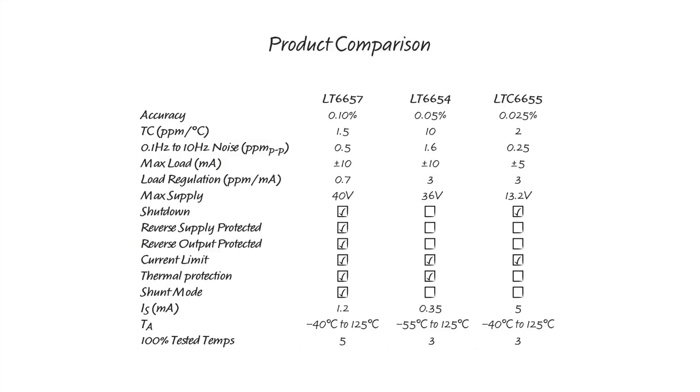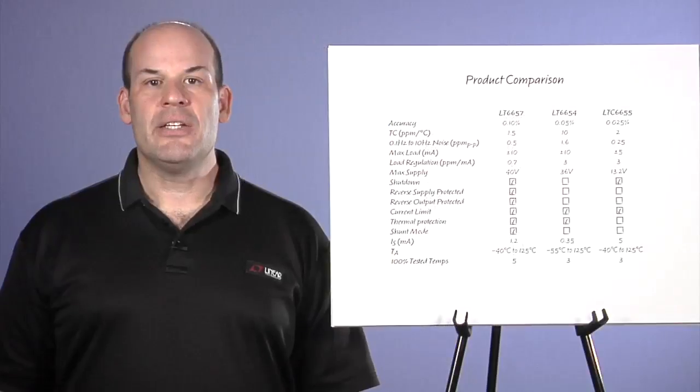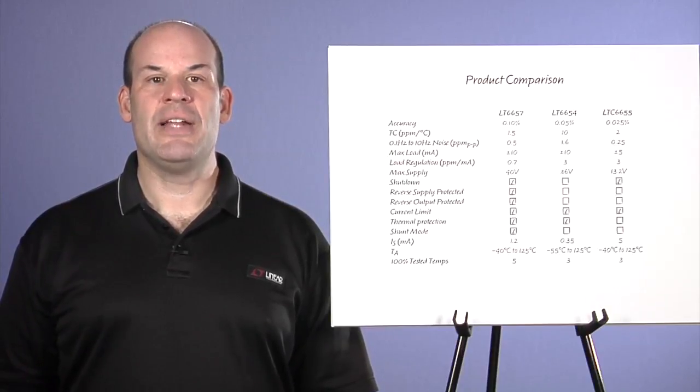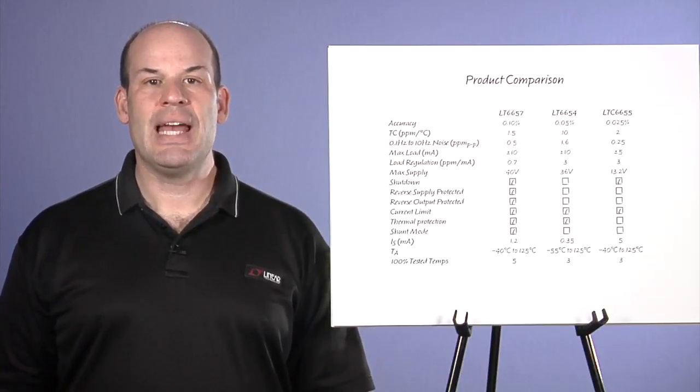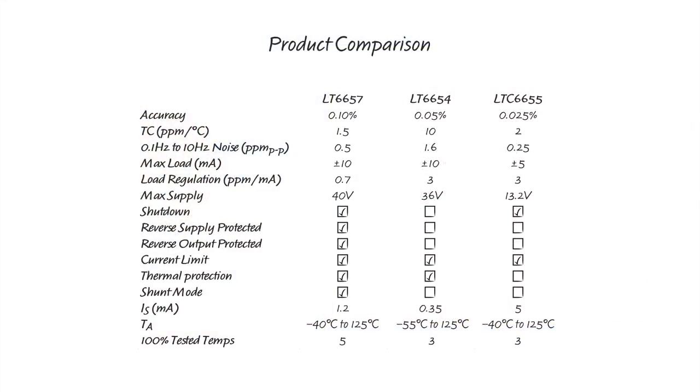Compared to LTC6655, LT6657 is even more stable at 1.5 ppm per degree C, and this performance is guaranteed with 100% five-temperature test. In addition to impressive stability, LTC6655 also provides unparalleled noise performance which differentiates it from other high stability bandgaps, including LT6657. With 0.25 ppm peak-to-peak noise in 0.1 to 10 hertz, LTC6655 provides the low noise floor required for high dynamic range measurement.